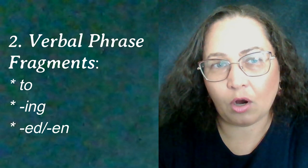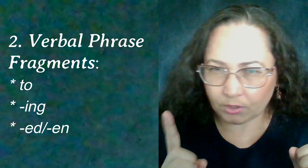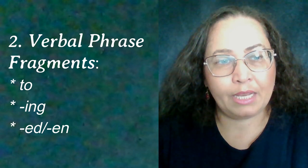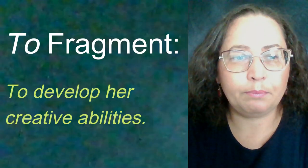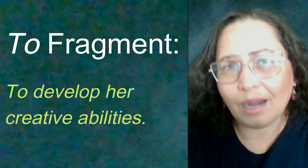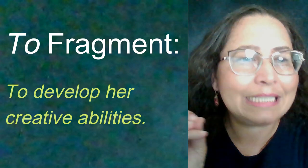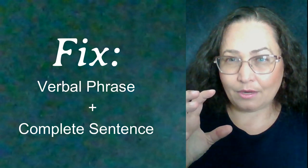The second category of fragments are the verbal phrase fragments. A verbal phrase fragment begins with a verb form that does not function as the main verb of the sentence. Verbal phrase fragments include to-fragments, ing fragments, and ed or en fragments. For example, a to-fragment: 'To develop her creative properties.' On its own, this verbal phrase does not express a complete thought, for which it is clearly a fragment. To express a complete thought, this phrase needs to be supported by an independent clause.